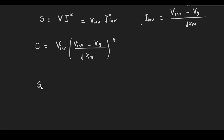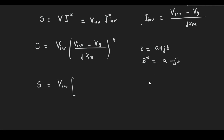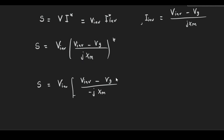To find the conjugate of (V_inv − Vg) / jXm: since we have real numbers on top, we just change the sign of the imaginary part. Recall that for complex number z = a + jb, the conjugate z* = a − jb. So we just change the sign of j. The conjugate of jXm is −jXm, giving us the conjugate of the whole expression as (V_inv − Vg) / (−jXm).